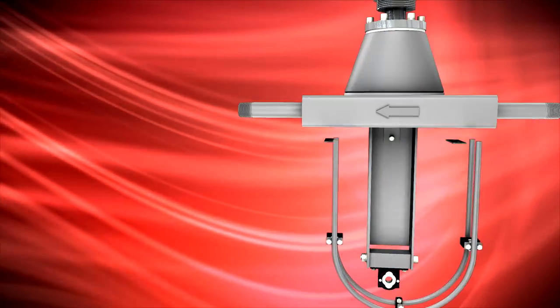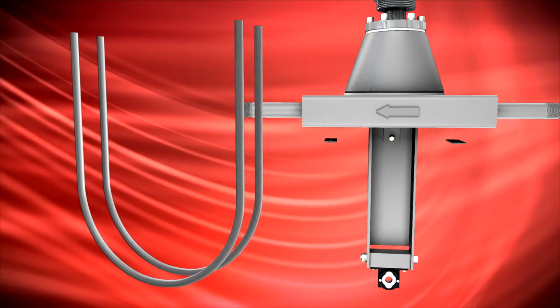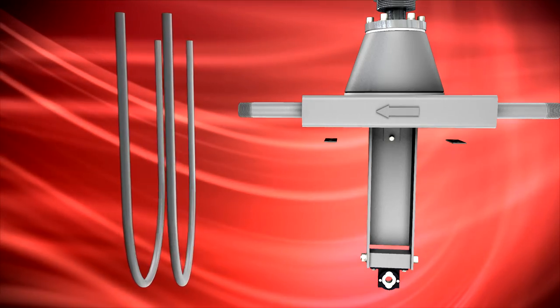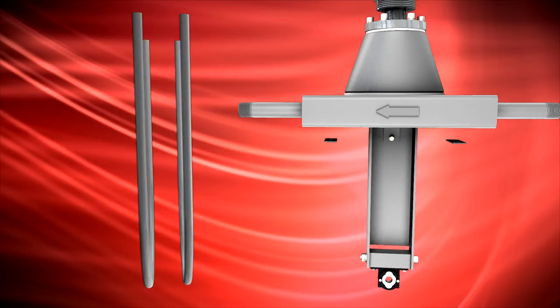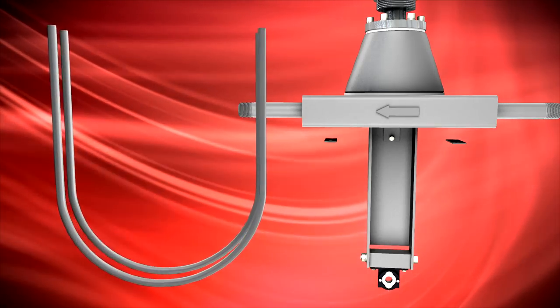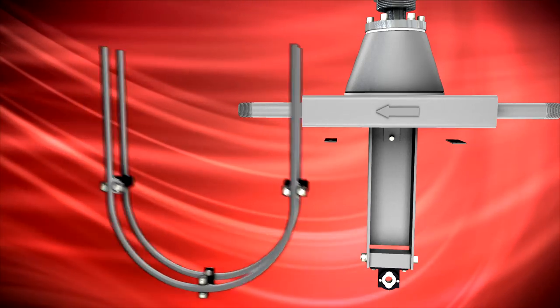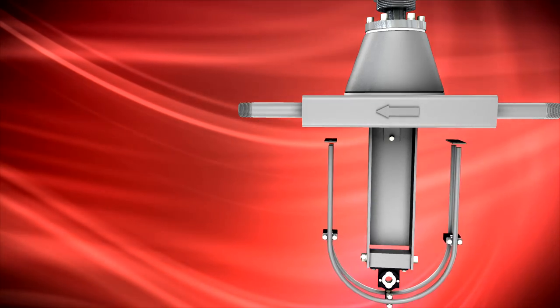Badger Meter utilizes a precisely balanced dual tube design that provides a balance between performance and reliability. With no internal moving parts, our Coriolis mass flow meter produces excellent accuracy and repeatability with greater immunity to adverse flow conditions.